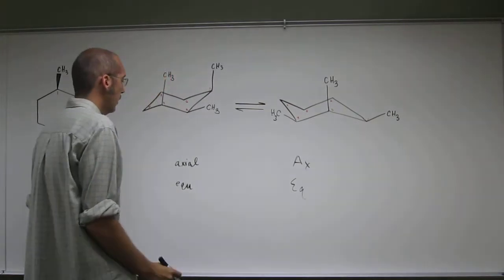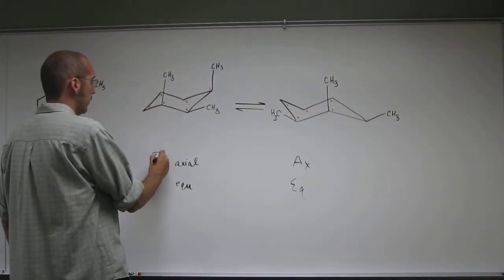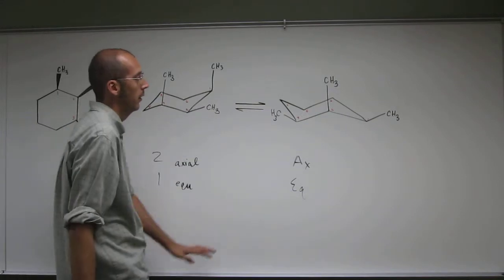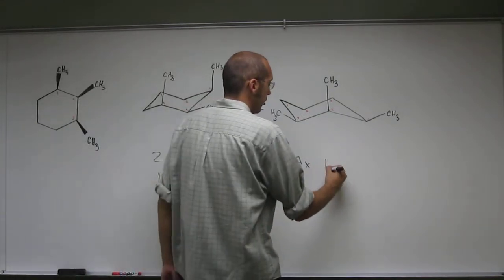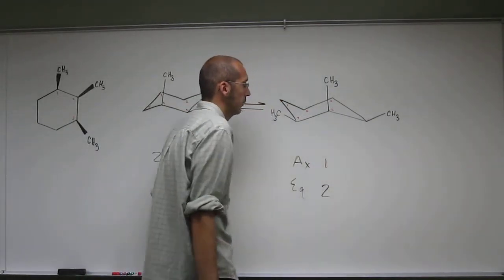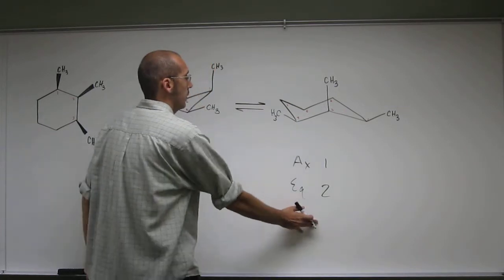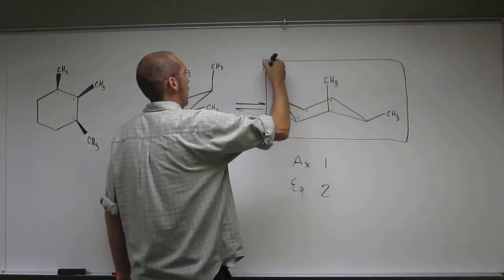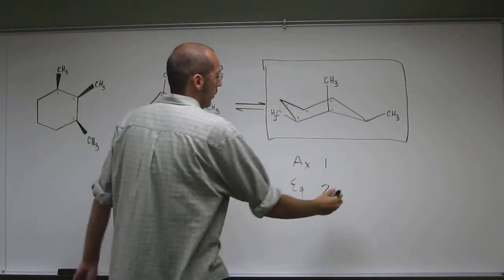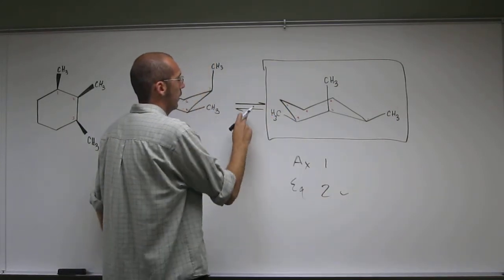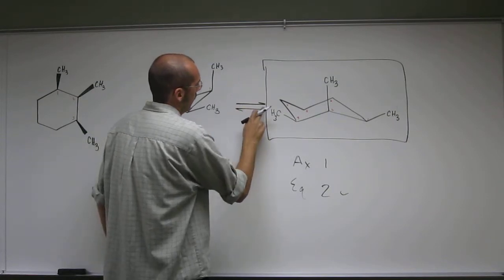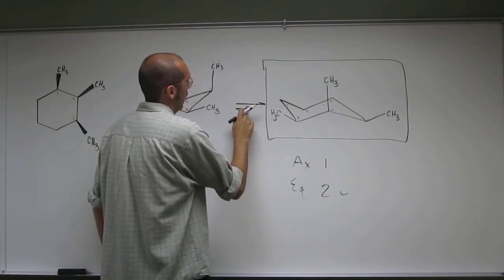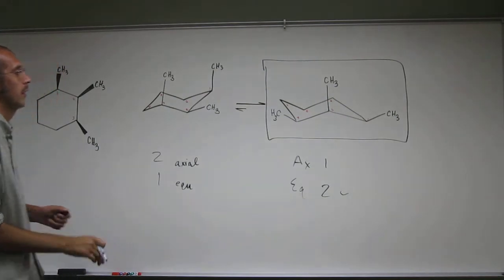Okay, so here we've got how many axials, how many equatorials, so 2 axials, 1 equatorial. Here we've got 1 axial, 2 equatorials, so this one's more stable, because, remember, equatorials are more stable than axials, so we're going to do something like that.